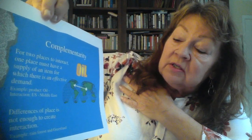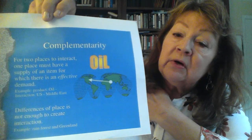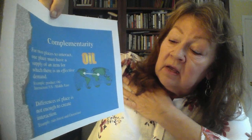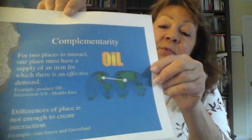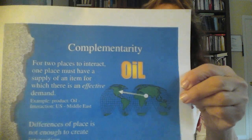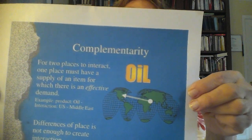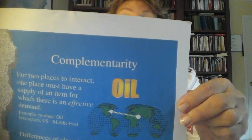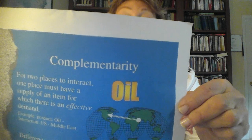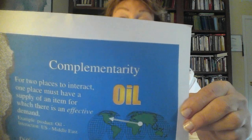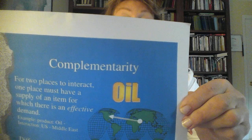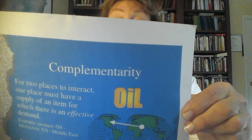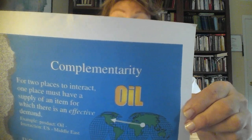Just being two different places is not enough for spatial interaction. An example given here is Greenland and the rainforest of Brazil. Just because Greenland is a big cold icy place up north and Brazil has abundant rainforest does not mean we have complementarity, because we have to have a supply of a desirable product in one place and a shortage or demand for that product in another place.